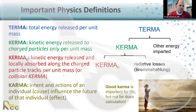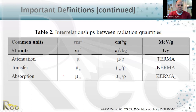A few more important definitions: we have the mass attenuation coefficient and also the mass energy absorption coefficient. These attenuation coefficients are related to TERMA, KERMA, and collision KERMA as outlined in this table.